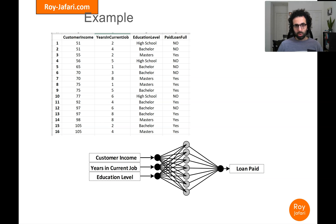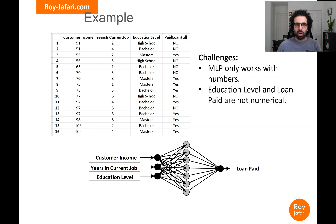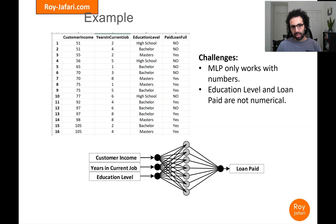The challenge is that MLP works with numbers — all of these connections are numbers and at the end you want to have a number. Class labels don't work well with the way MLP operates. So we have to make sure that everything is numerical or represented with numbers in an appropriate way. Here we have education level and loan paid, which are categorical, so we have to deal with that.